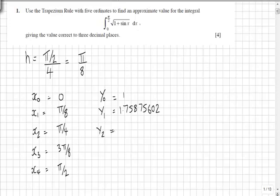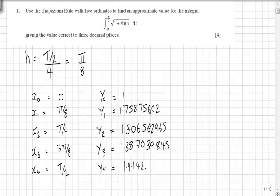Y₂ will become 1.306562965, y₃ will be 1.387039845, and finally y₄ will be 1.414213562.